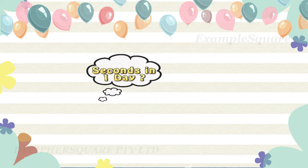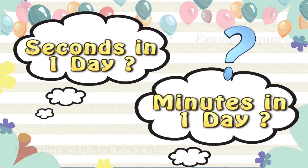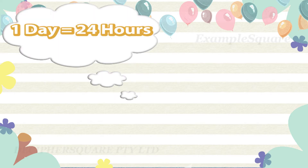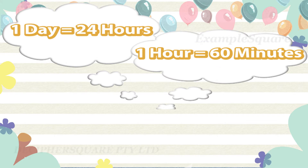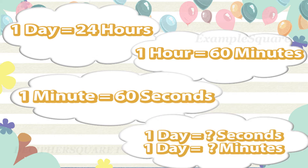Ever wondered how many seconds or minutes are there in just one day? There are 24 hours in a day, 60 minutes in an hour, and 60 seconds in every minute. In this video, it is calculated how many minutes and seconds that equates to in one whole day.